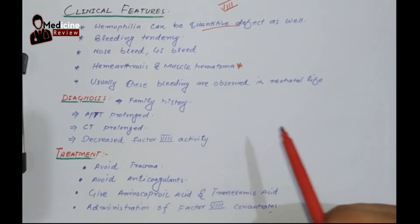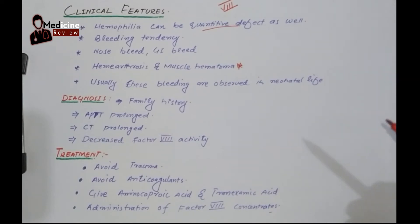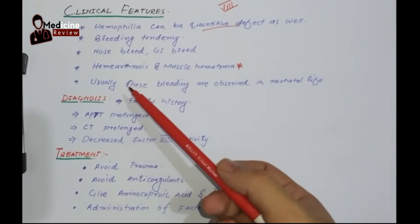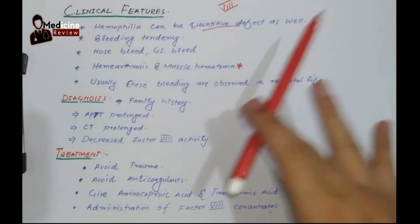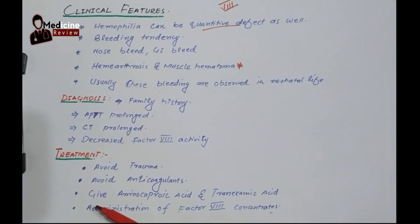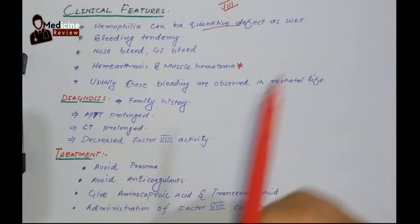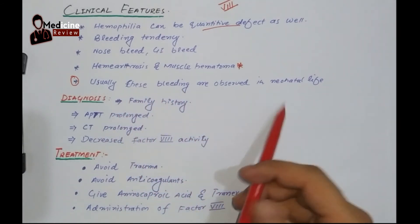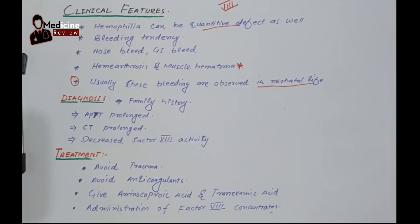These are quite frequently seen. You will see a child with no trauma history, no history of playing games or whatsoever, but they will come with swollen joints, blood in the joint, or muscle hematoma. This is a classical picture of Hemophilia A. These bleeding episodes are observed in neonatal life, so it is one of those conditions which can be diagnosed even at the time of birth.